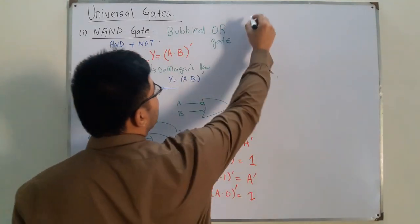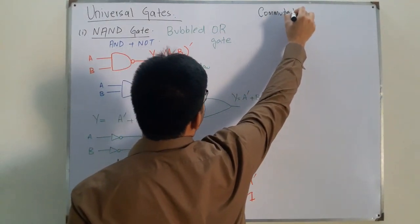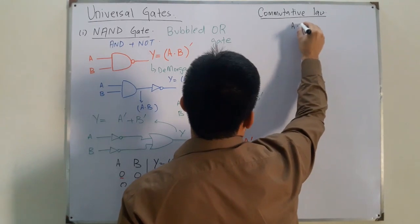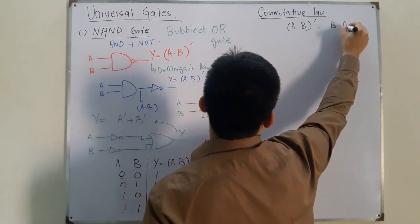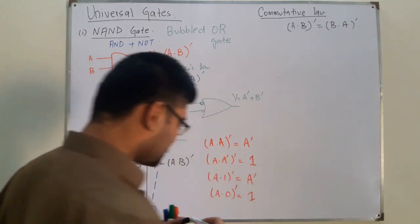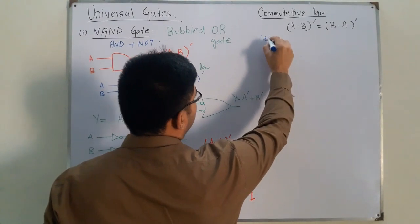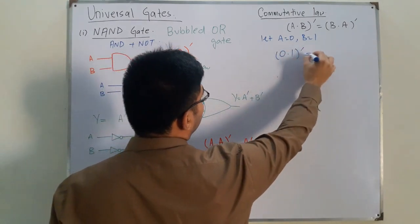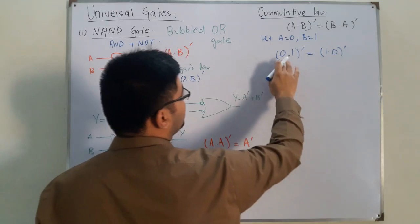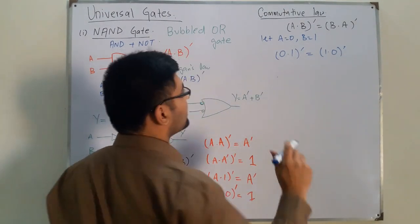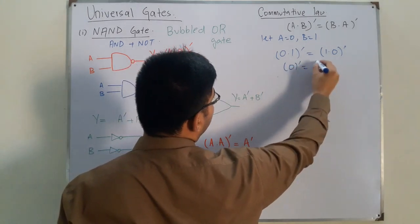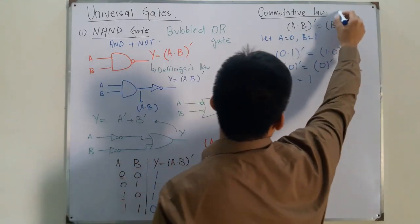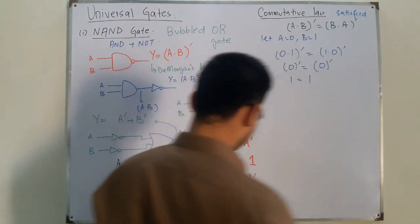Now we discuss the commutative law. The commutative law states: A NAND B equals B NAND A. Let's say A is zero and B is one. Zero NAND one: zero AND one is zero, complement is one. One NAND zero: one AND zero is zero, complement is one. One equals one, so the commutative law is satisfied by the NAND gate.